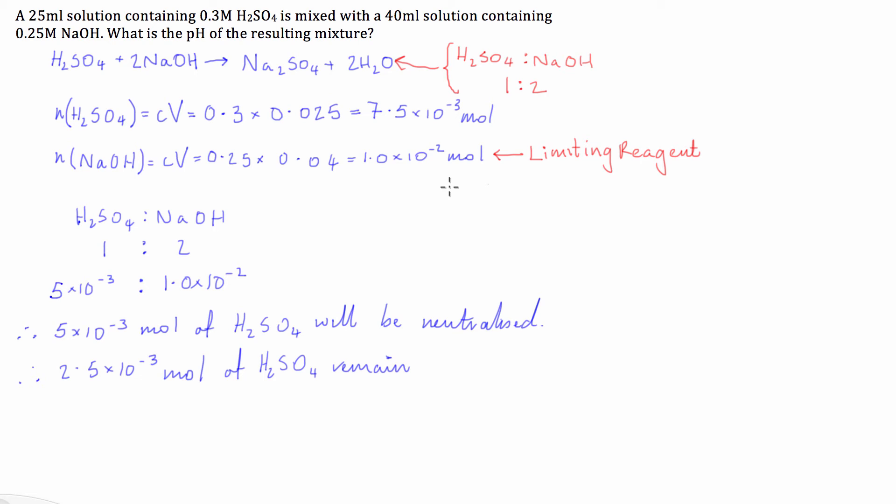Cool so we need to calculate the pH of the resulting mixture so to calculate pH we use the formula pH is equal to the negative log to the base 10 of H plus ion concentration. Now for us to be able to get this H plus ion concentration what we're going to need to do is we're going to need to work out what the ratio of H2SO4 to H plus ions is so we know that one H2SO4 is going to give two H plus ions.